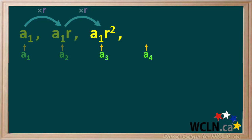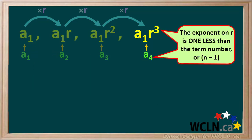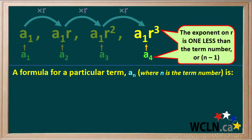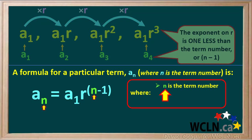To go from the third term to the fourth term, a4, we multiply term 3 by r. a1r squared times r is equal to a1r cubed. So term 4 is a1r cubed. Notice a couple of things: firstly, all the terms start with a1, the value of the first term. And secondly, the exponent on r is 1 less than the term number, or n minus 1. Here, the term number is 4, and the exponent on r is 4 minus 1, or 3. So we can create a formula for finding a particular term, aₙ, where n is the term number: aₙ equals a1 times r to the power of n minus 1, where n is the term number, a1 is the first term, and r is the common ratio.